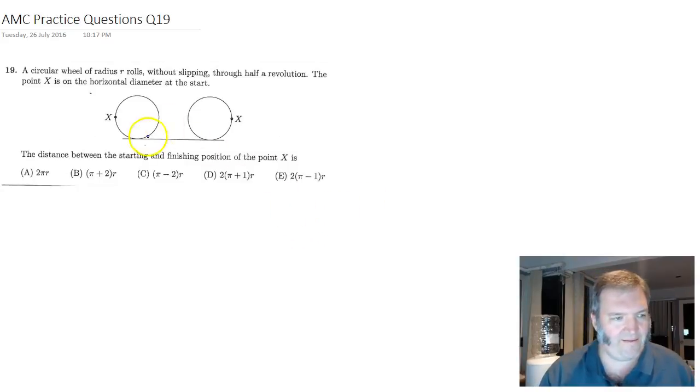This one is deceptively easy. Let's just put that in the center of the circle. That's where I start, if you like, and that's where the center of the circle finishes. We've got that much sorted out, and the starting and finishing of the point X is what we're actually interested in.